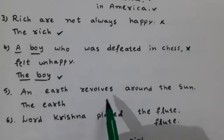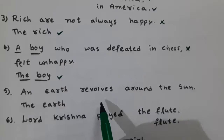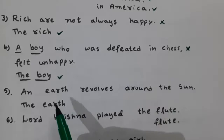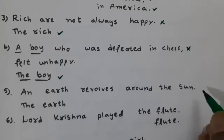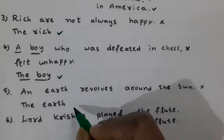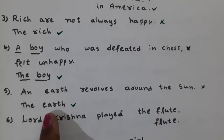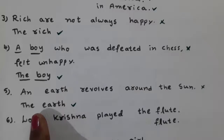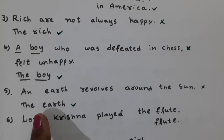Next: 'An earth revolves around the sun' versus 'The earth revolves around the sun.' 'The earth revolves around the sun' is correct. Before objects of nature and directions, we use the definite article 'the' — for example: the sun, the moon, the earth, the sky, the north, the south, the east, the west.